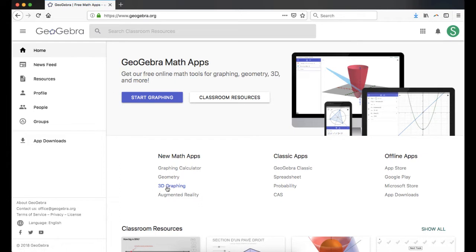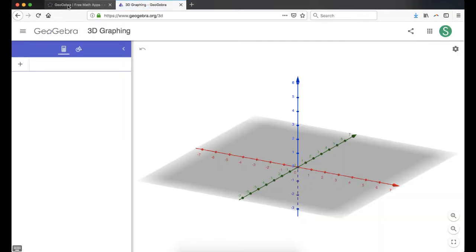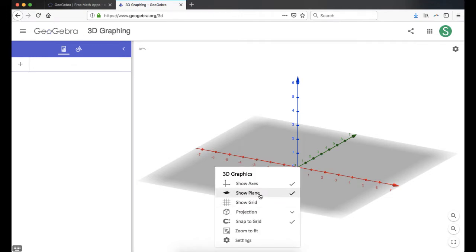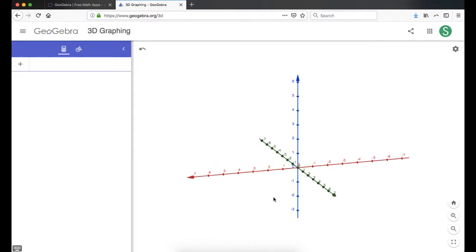So I need 3D graphing, and you click it, it opens a new window, so you can go back here if you want more windows, but we're going to start 3D graphing. And I don't really like this plane, so I'm going to right click or two finger click and just uncheck show plane. And so this is our 3D space that we're going to deal with.